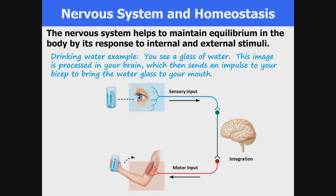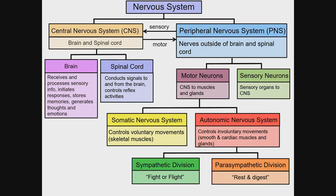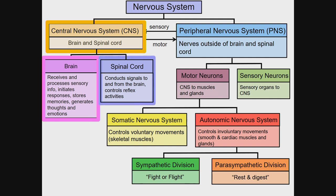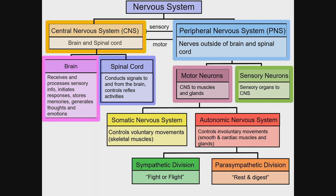Homeostasis and the nervous system. The nervous system helps to maintain equilibrium in the body by its response to internal and external stimuli. For example, you see a glass of water, this image is processed in your brain which then sends an impulse to your bicep to bring the water glass to your mouth. The nervous system has two main divisions: the central nervous system, which consists of the brain and spinal cord, and the peripheral nervous system, which is made of sensory neurons that bring information into your central nervous system, and motor neurons that carry information out.